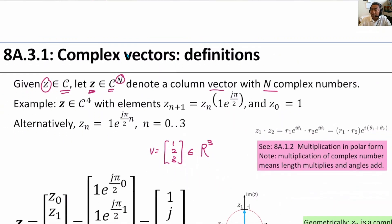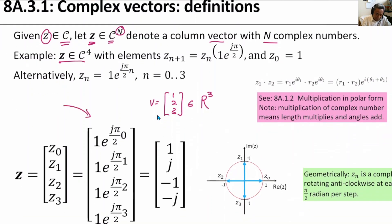So as an example, z is a vector like this: we have z0, z1, z2, z3, where these are all complex numbers. In this example, the elements have these values: z_{n+1} equals z_n multiplied by 1 e^{j π/2}. It's iterating from 0 to 3, and when you plug in this equation, you'll get these four numbers.